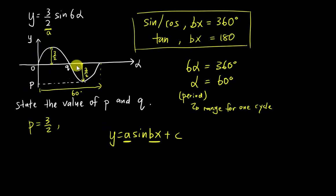So q is quite straightforward: 60 divided by 2, which is 30 degrees. If you want to do it in radians, you can always do something like 6α equals 2π, then alpha equals π over 3. Then over here, the q in radian mode will be π over 6.